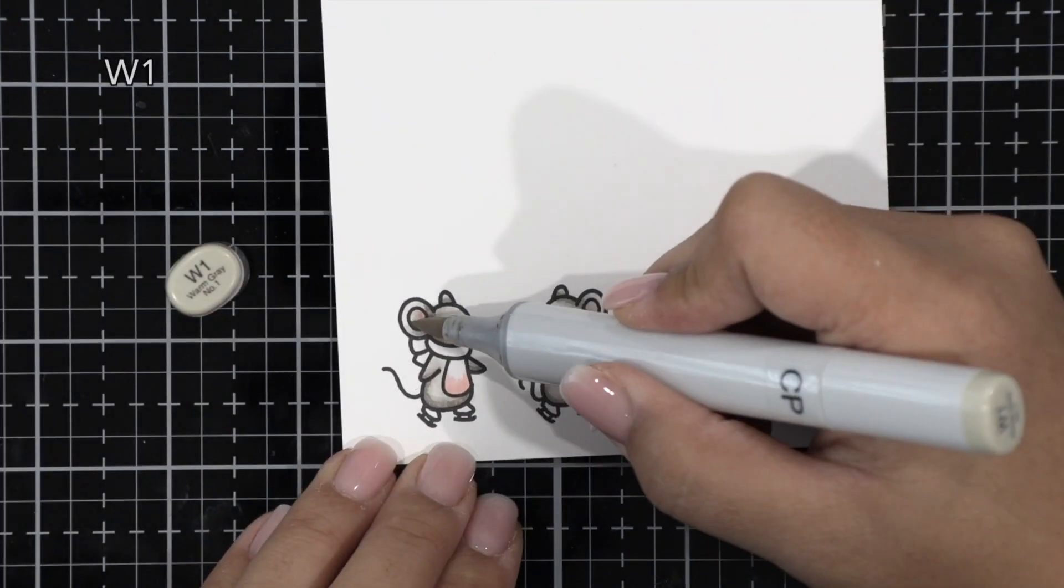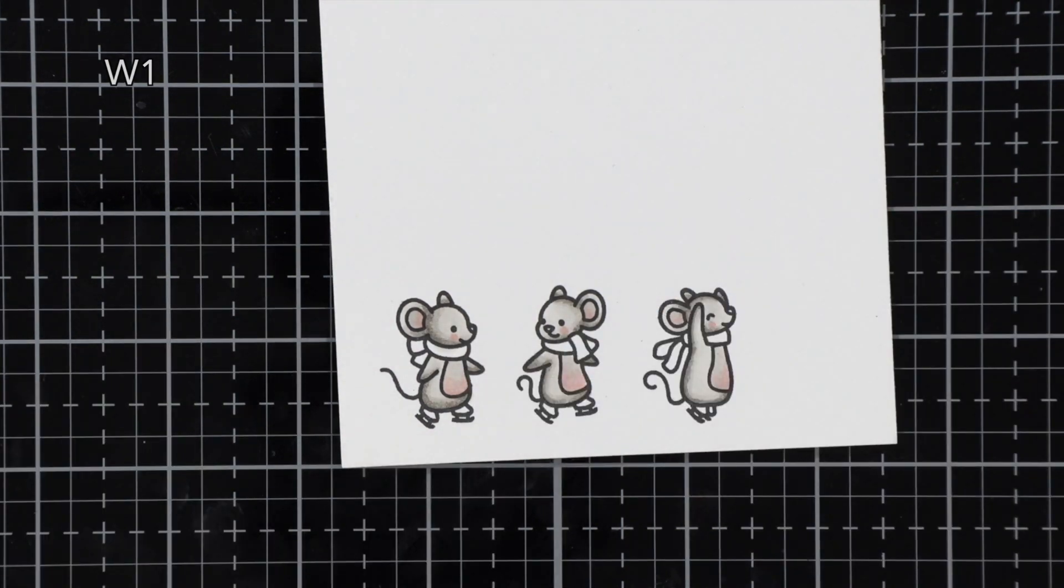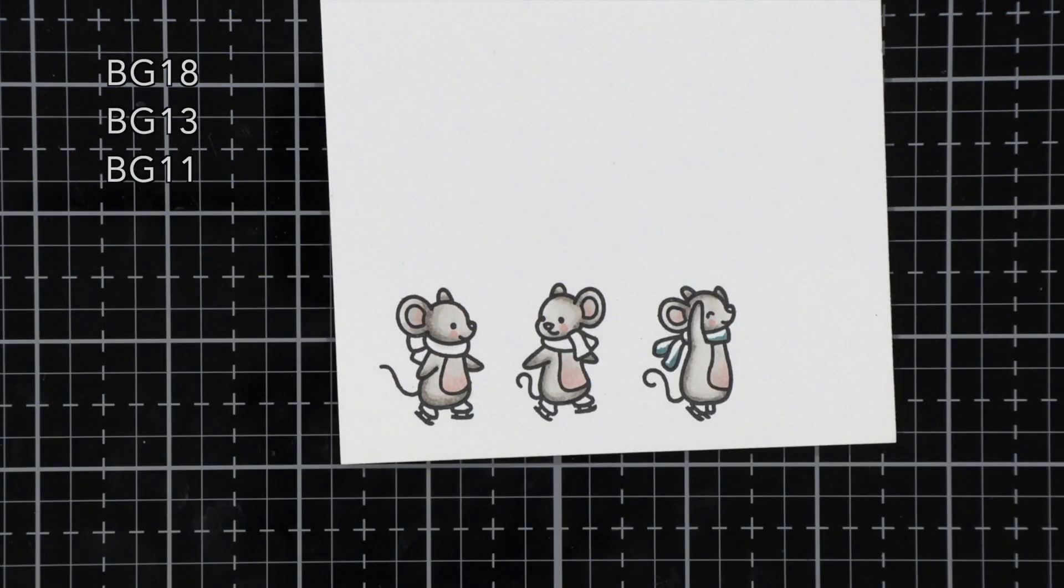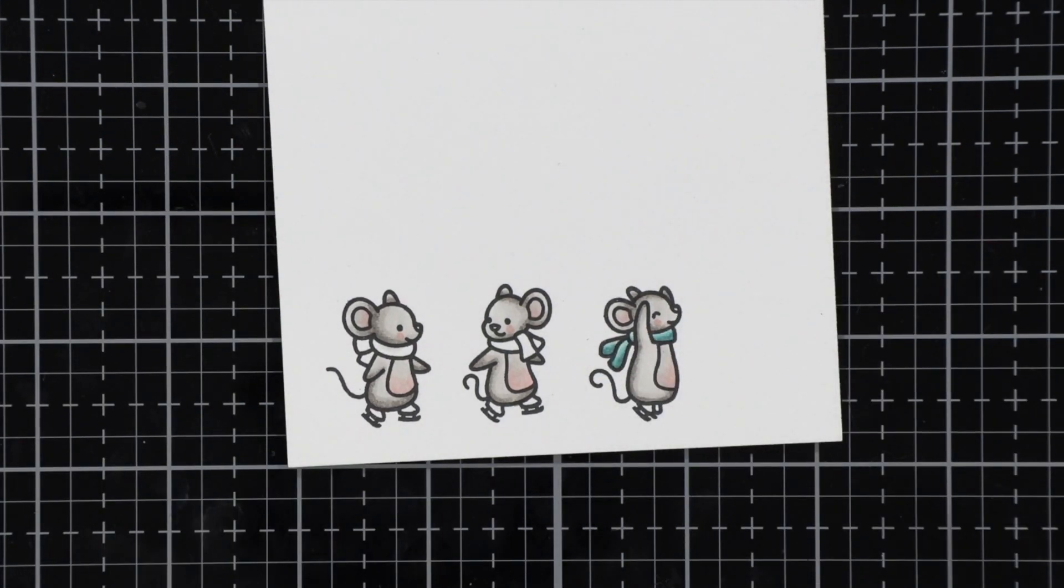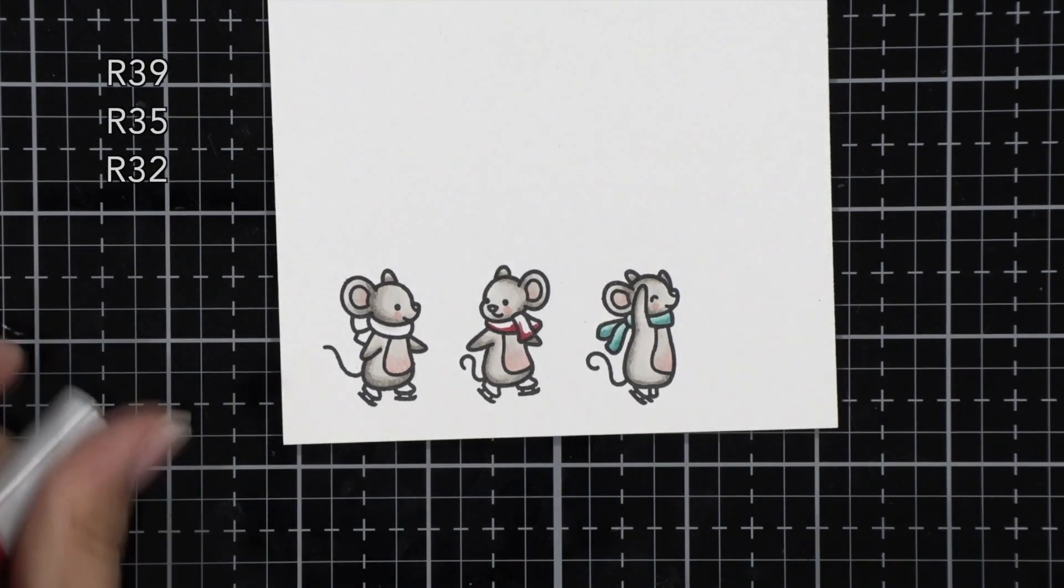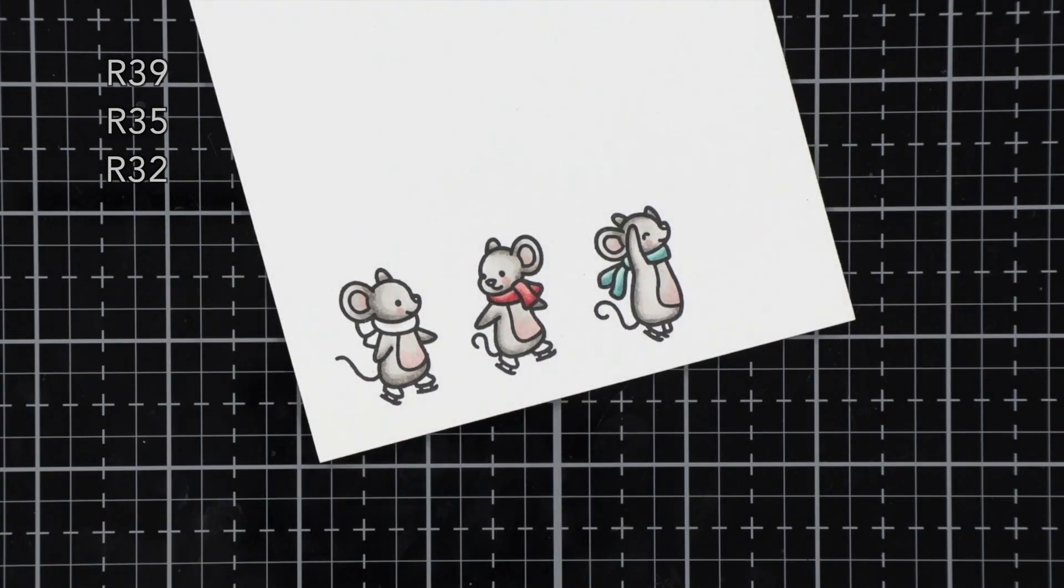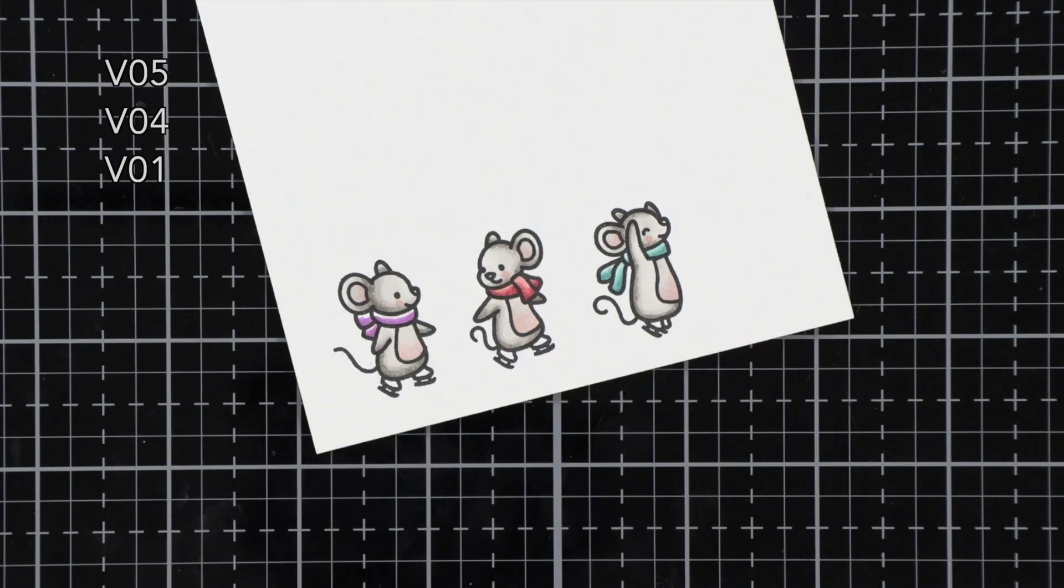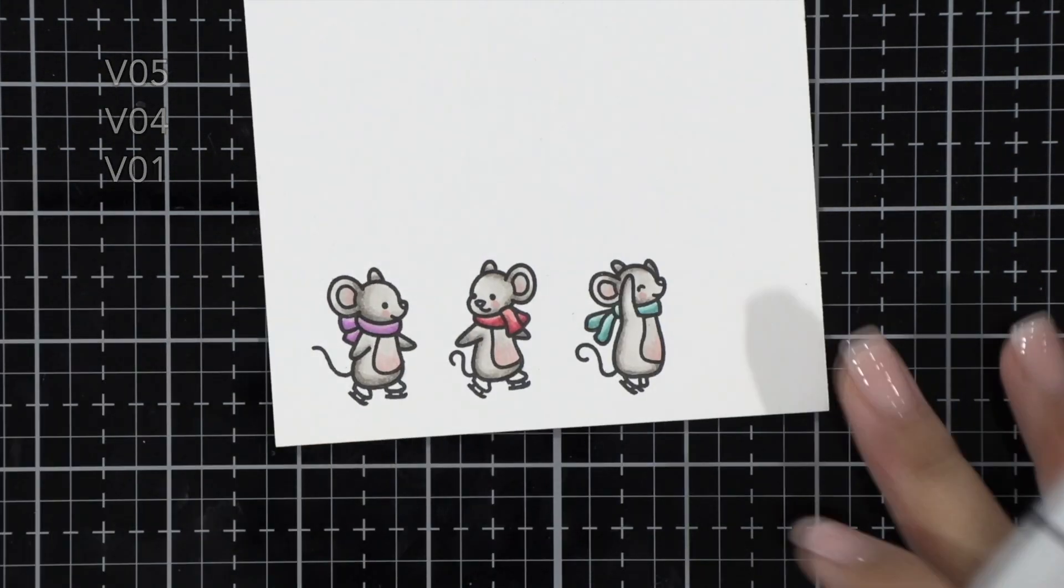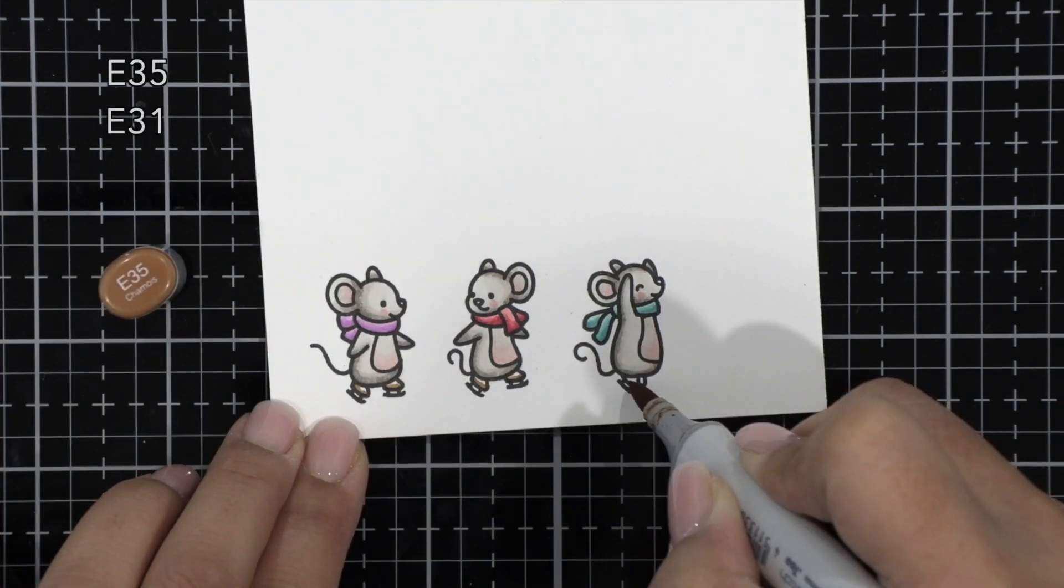For the bellies and ears, I'm doing R20 and then muting that color slightly by blending the W1 over it to coordinate with the rest of the mice. We want pops of color on those scarves, so I'm using teals and reds and purples. The colors are written above in the upper left-hand corner for you for reference.